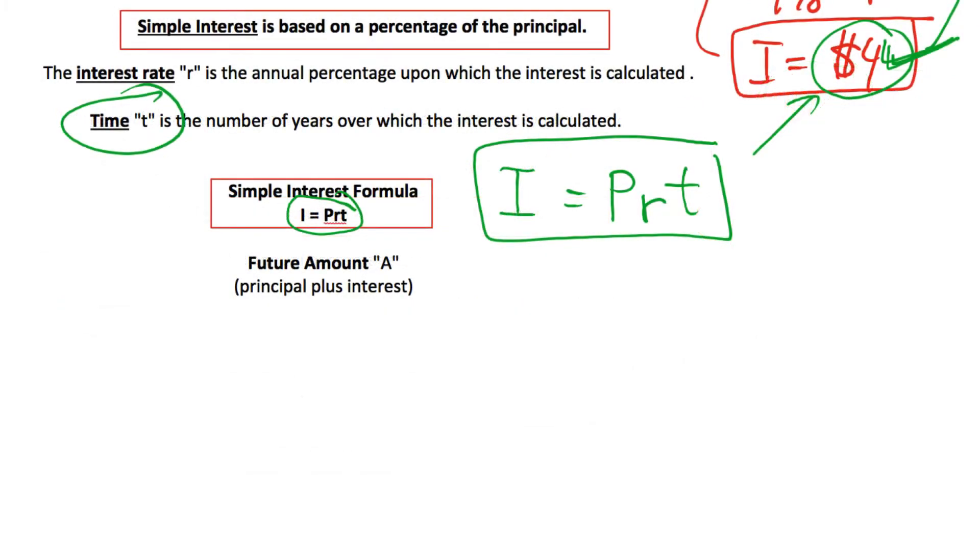Now the other thing we often want to know or keep track of is the amount of money we have, which includes the principal plus the interest. So our accumulated amount A is our principal plus our interest.